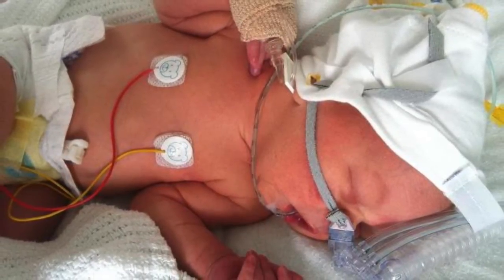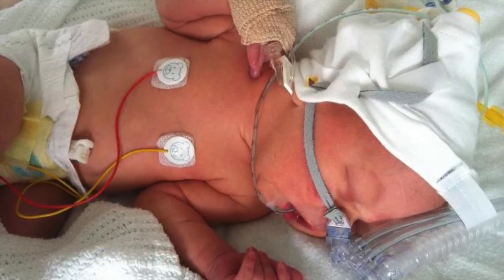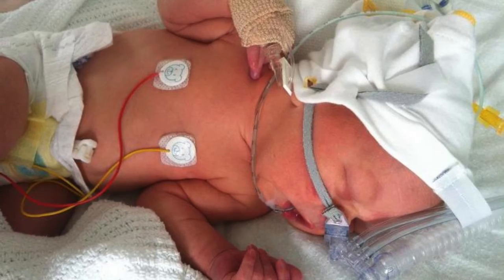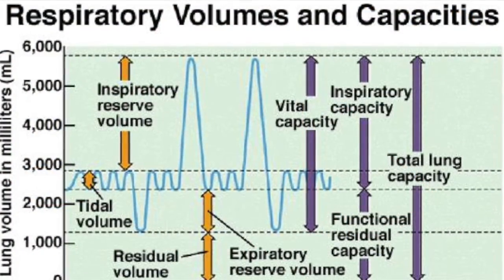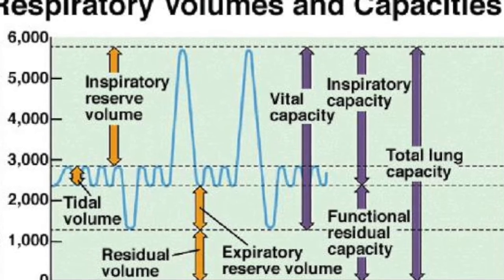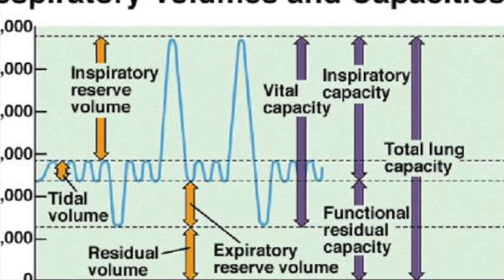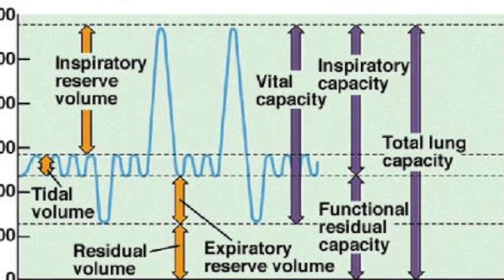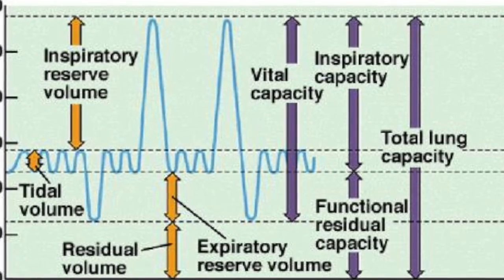Inadequate surfactant production causes air sacs to collapse when breathing out, and greatly increases the energy required for breathing. The oscillator works by using a constant descending pressure. Pressure variations move around at very high rates, up to 900 cycles per minute. This creates small tidal volumes, often less than the volume of air which is inhaled that does not take part in gas exchange.